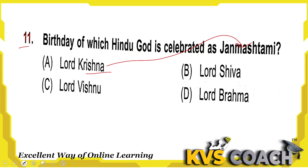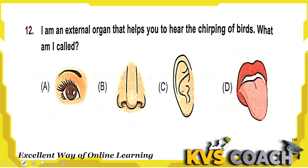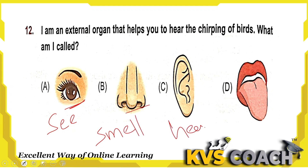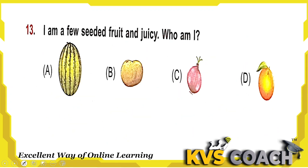Next: the birthday of which Hindu god is celebrated as Janmashtami? Lord Krishna's birthday is Janmashtami, and Lord Shiva's birthday is Shivratri. Option A is the right answer. Next: I am an external organ that helps you hear the chirping of birds — what am I? From the eye we see, from the nose we smell, from the ear we hear, from the tongue we taste. We hear the chirping of birds with our ears. Option C is the right answer.